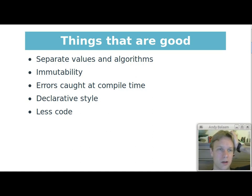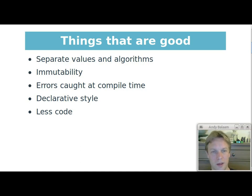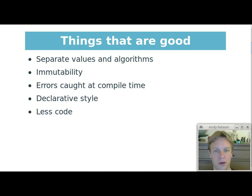Other things I think are good: immutability — stuff not changing, or having very careful control of what's going to change — so most things are not going to change, and you can concentrate on the things that might change. Things that might change cause complexity, because when you come back to them next time they might be different. That's true in single-threaded code; it's particularly true when you've got multiple threads of execution manipulating things. Other things I think are good: finding out about mistakes as early as possible — finding out when I run the compiler instead of when I run the program.